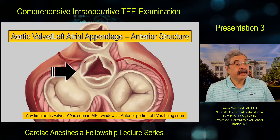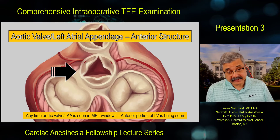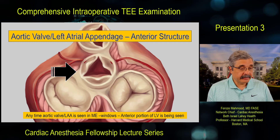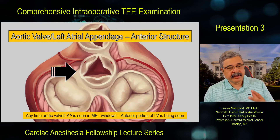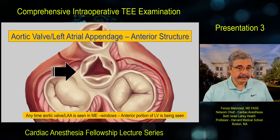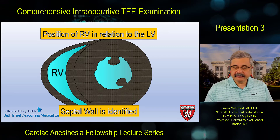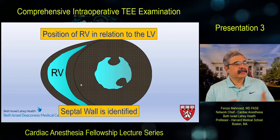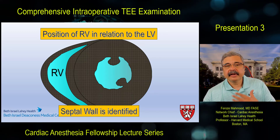Another important anatomical landmark for identifying myocardial walls and wall motion abnormalities is visualization of the aortic valve and left atrial appendage — both are anterior structures, the aortic valve being most anterior and the left atrial appendage being anterior and lateral. Anytime the aortic valve or left atrial appendage is seen, we are looking at the more anterior or anterolateral portion of the heart. The wall between the left and right ventricle is the septal wall. These three anatomical points — aortic valve, left atrial appendage, and interventricular septum — make it easy to identify various walls.